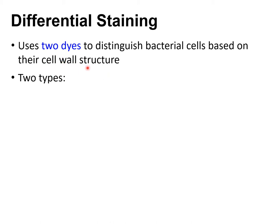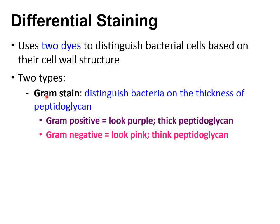Differential staining usually has something to do with the cell wall structure, so we're going to be able to differentiate between bacterial cells based on differences in their cell wall structures. We'll start with the gram stain. The gram stain is a differential stain that helps us distinguish bacteria based on the thickness of their peptidoglycan cell wall. Some bacteria have a pretty thick layer of peptidoglycan and some have a pretty thin layer.